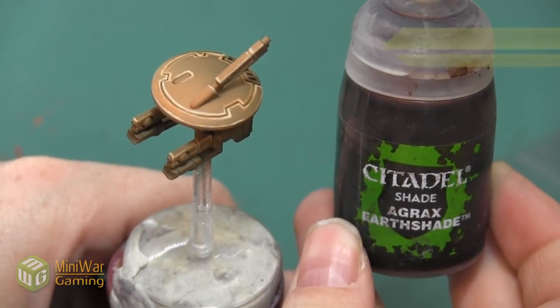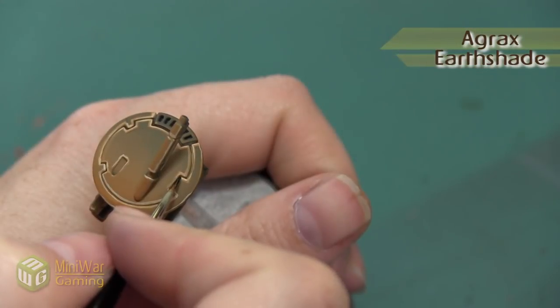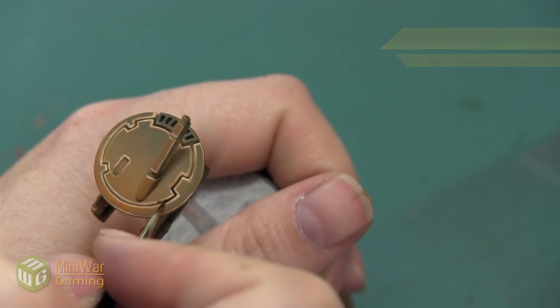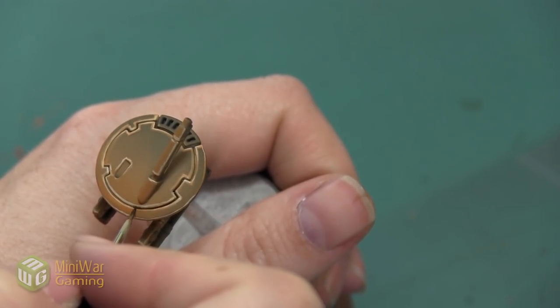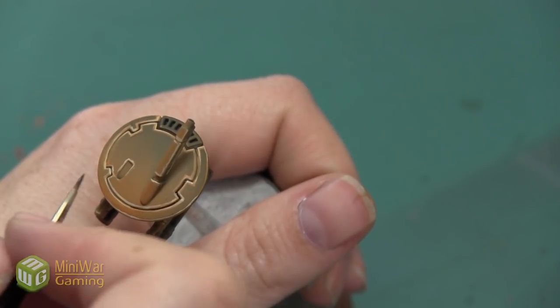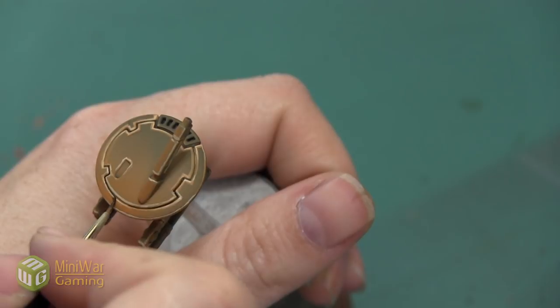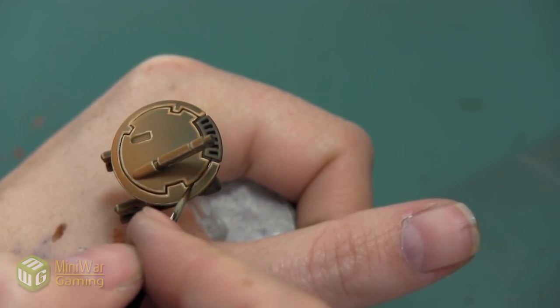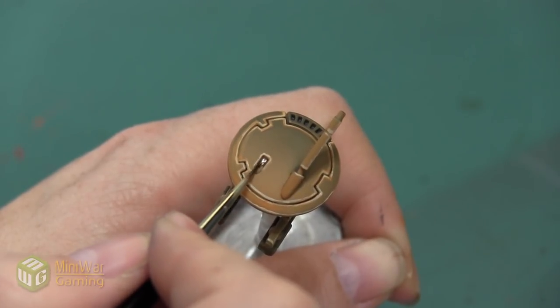The last step is to take a little bit of Agrax Earthshade, and I just want to put this into the recesses that are sculpted on the drone just to make those shadows a little bit darker, and that's going to make all the lining stand out even more. As you can see, I'm not applying it very thickly at all. I'm kind of loading up my brush and then moving that paint around so that it's got a nice thin layer everywhere and it doesn't pool or go on too thick.